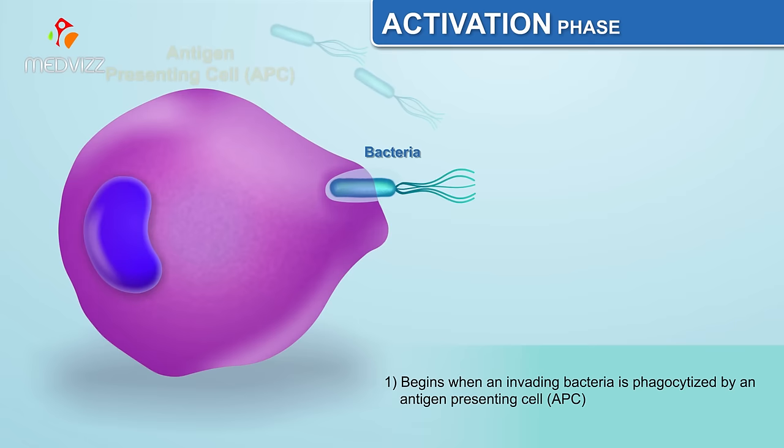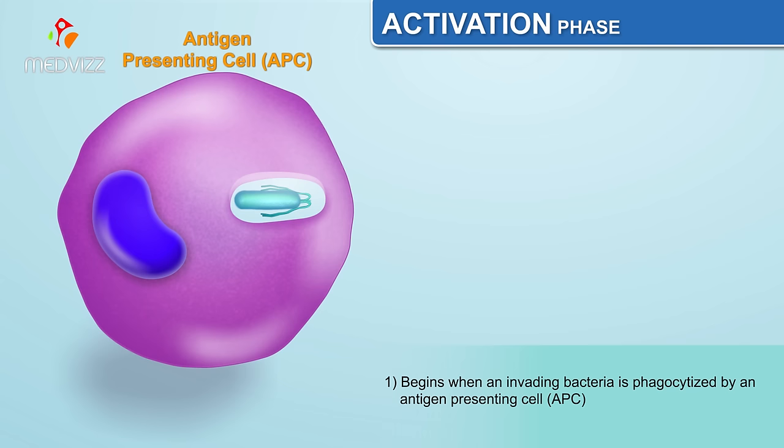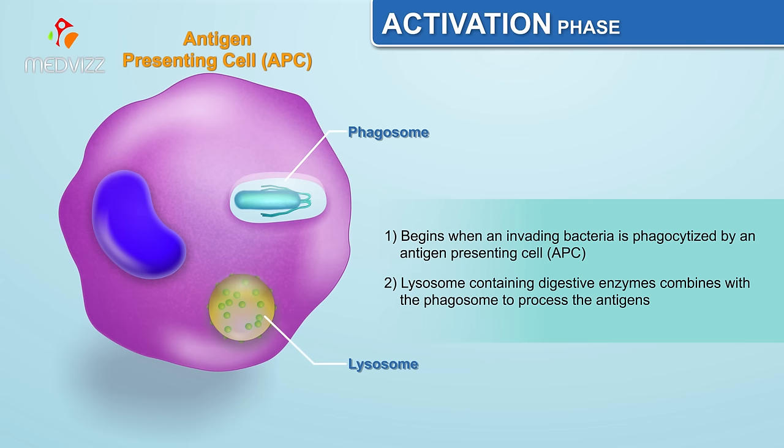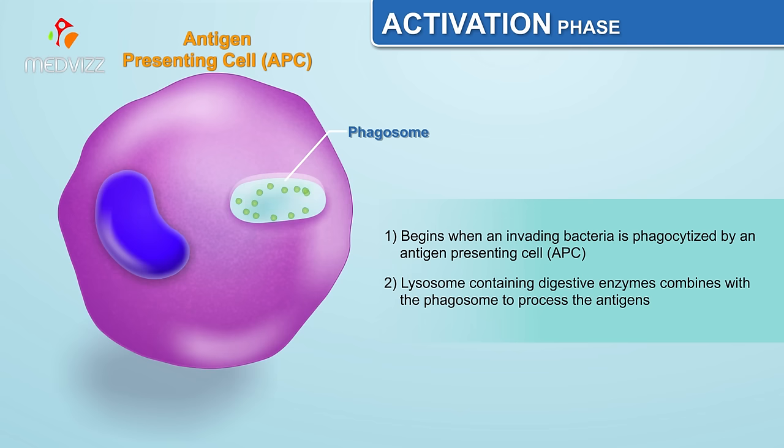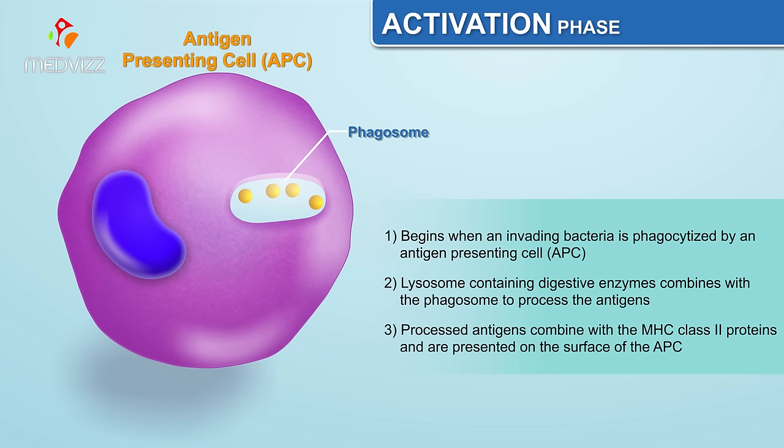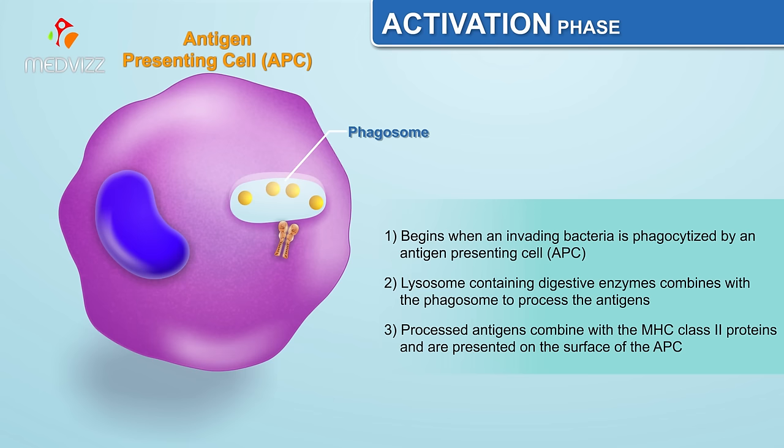The activation phase begins when an invading bacteria is phagocytized, engulfed by an antigen presenting cell (APC). A lysosome containing digestive enzymes combines with the phagosome to process the antigens. The processed antigens combine with the MHC class 2 proteins and are presented on the surface of the APC.